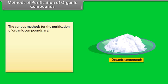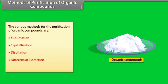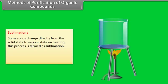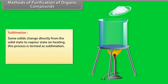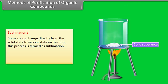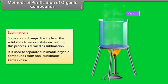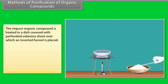Methods of purification of organic compounds: the various methods are sublimation, crystallization, distillation, differential extraction, and chromatography. Sublimation: some solids change directly from the solid state to vapour state on heating. This process is termed as sublimation. It is used to separate sublimable organic compounds from non-sublimable compounds.